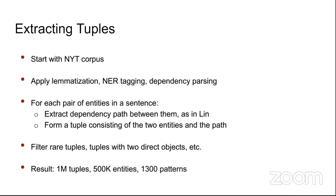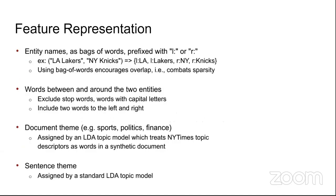Step 2: Feature representation. LA Lakers and New York Knicks are both NBA basketball teams. Entity names are associated with tokens (LA→la, NY→ny), using bag-of-words to capture overlap and reduce sparsity. Include words between and around the two entities, remove stop words and capitalized names, and include two words to the left and right. Eventually, the document set can be clustered by topic using an LDA topic model.